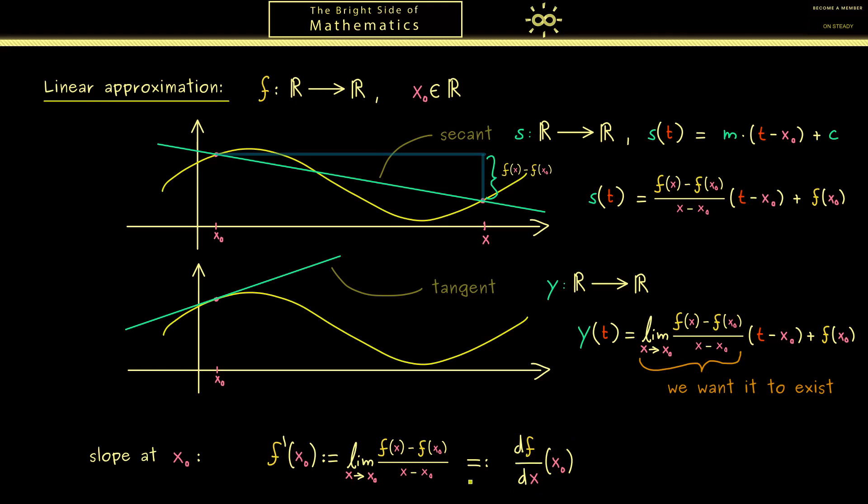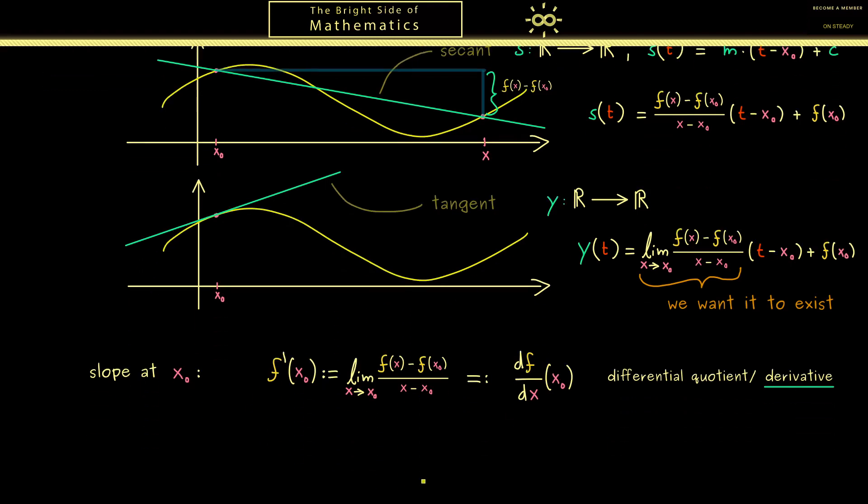However despite its name it is not a fraction but just a notation for this limit. Therefore instead of differential quotient more often the name derivative is used. Here please note in order to write down such a definition we had to do all the work we did before. We had to define sequences and then the notion to be arbitrarily close to a point. However in the moment we have this all of this makes sense and we are able to write down a definition.